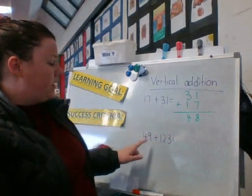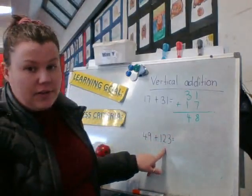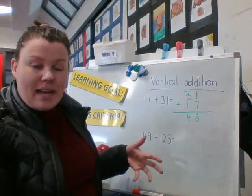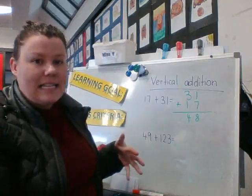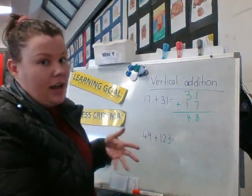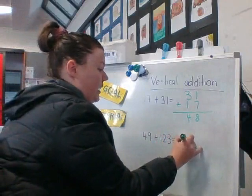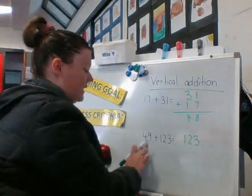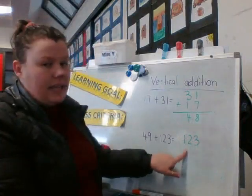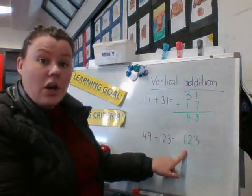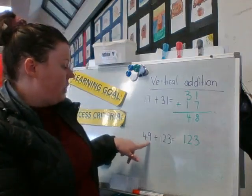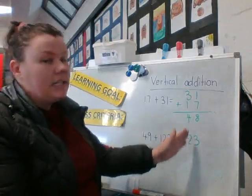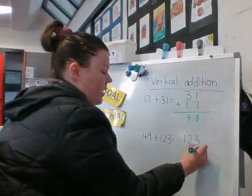Alrighty, so we've got 49 plus 123. Again, I like to start with my largest number on top because that sets me up really well for when we get up to some vertical subtraction algorithms. So we put 123 on top. And I need to stack my number 49 underneath. And I need to be mindful of the columns that I put it into. So 49 is a two-digit number. I need to make sure it starts in my tens column. 49.